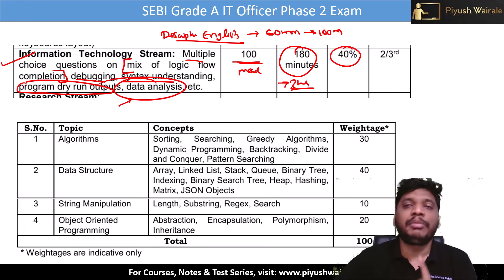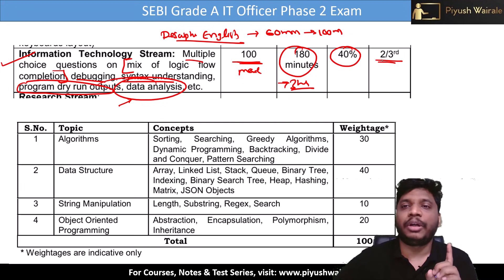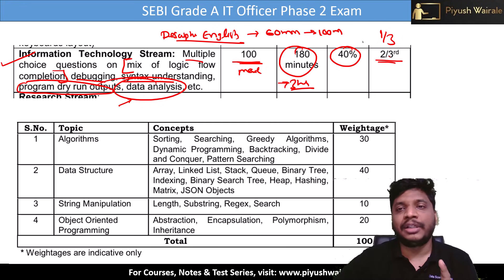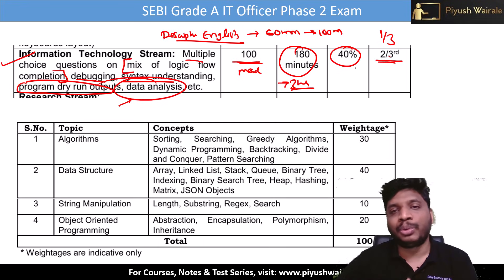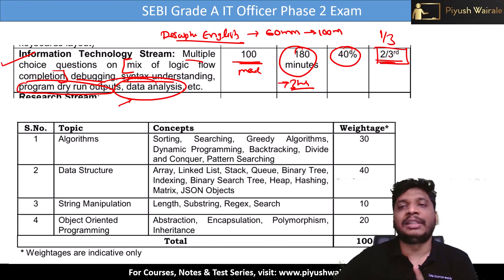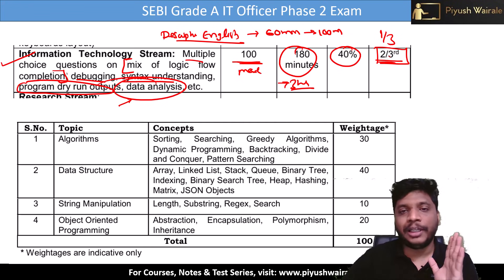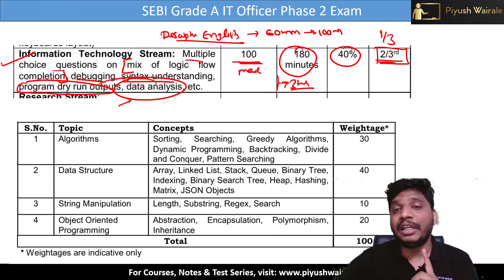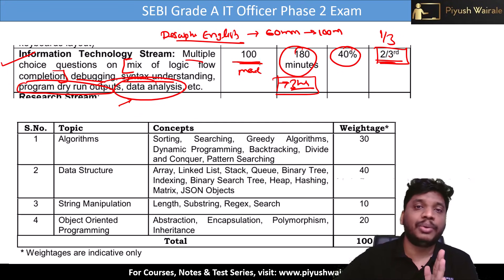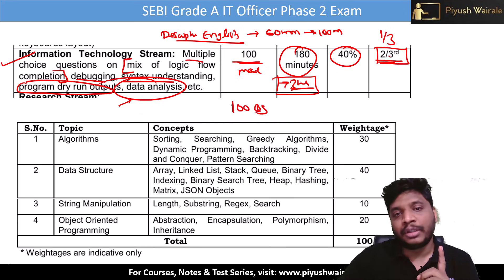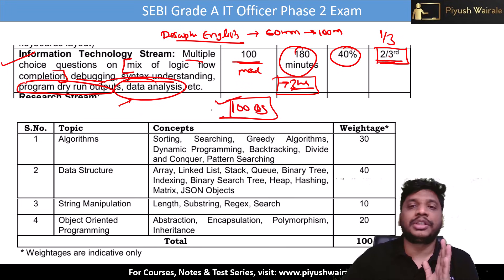40% is the minimum criteria. Two-thirds weightage is given to this paper and one-third is given to the English paper. Whatever marks you get in English multiply by one-third, plus whatever marks you get in IT stream multiply by two-thirds. So in the final selection, IT stream is going to play a huge role. You can expect around 100 questions for three hours.